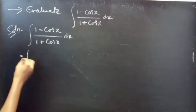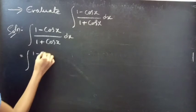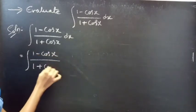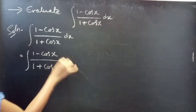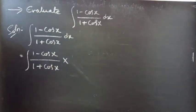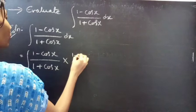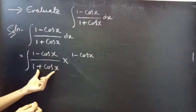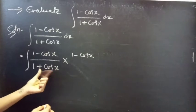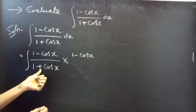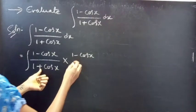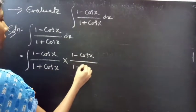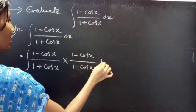Now, we will rationalize the denominator. This is equal to (1 minus cos x) by (1 plus cos x). We multiply and divide by (1 minus cos x). Since we are rationalizing the denominator of the integrand, and the denominator has a plus sign, we use minus.